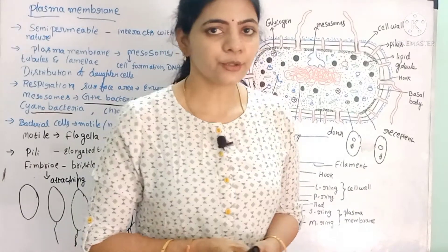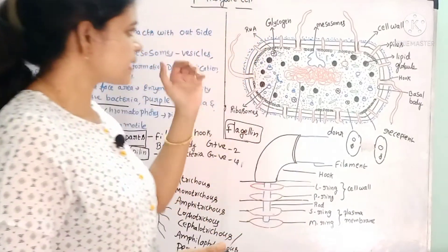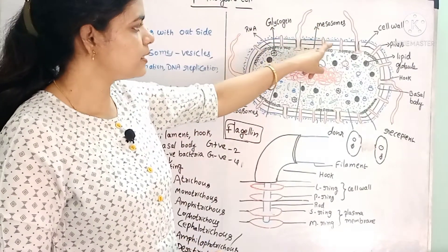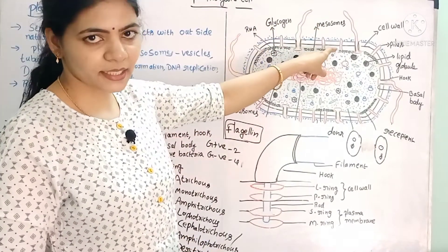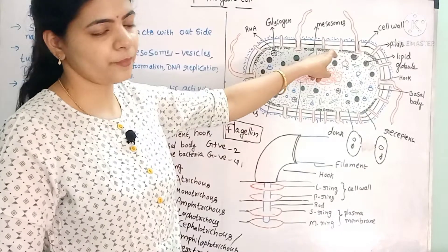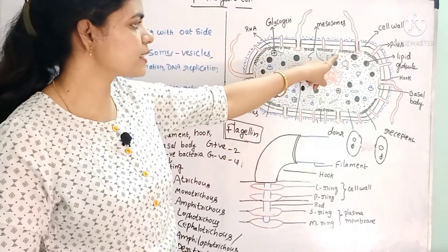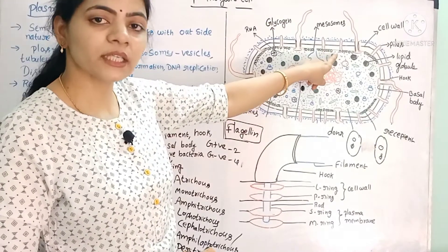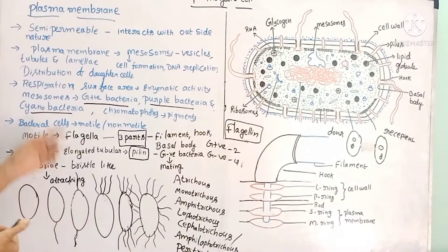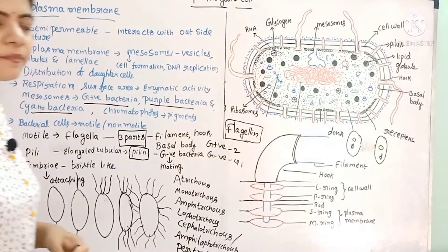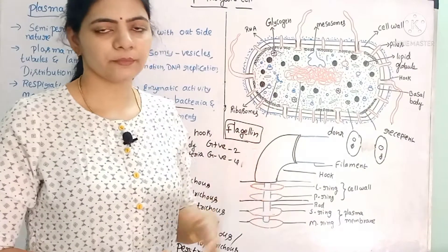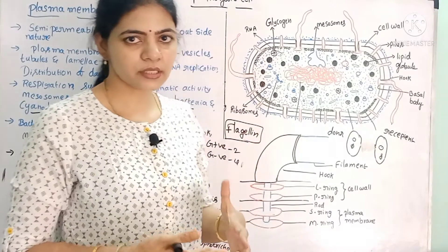In this video, we will look at the cell structure starting with glycocalyx. The second layer is the cell wall and the first one is the plasma membrane. The plasma membrane is similar in both prokaryotes and eukaryotes.